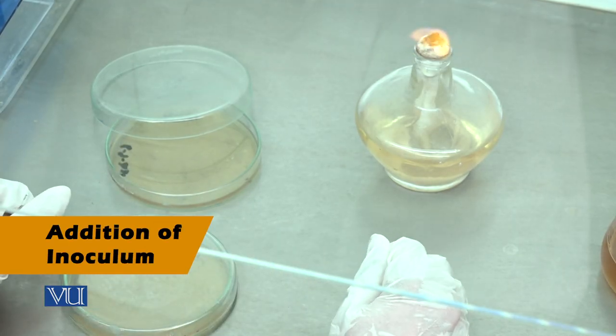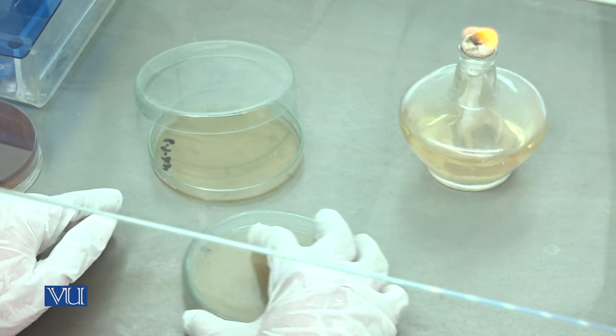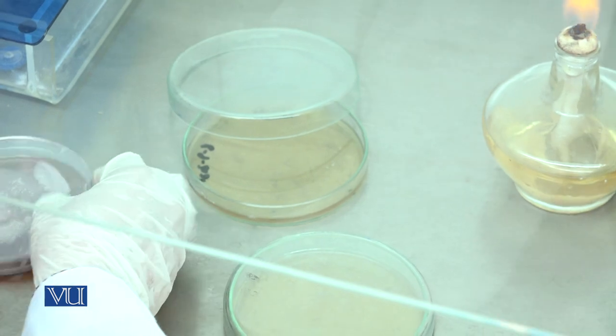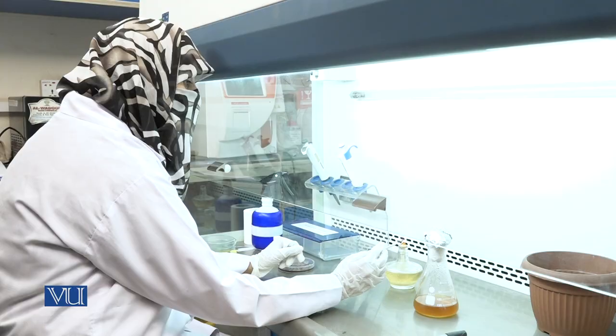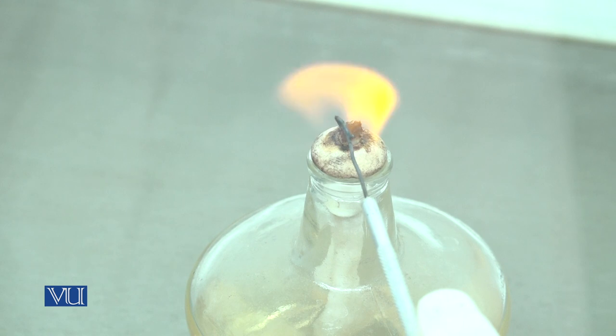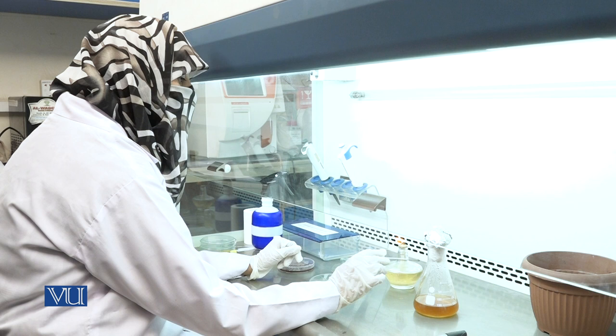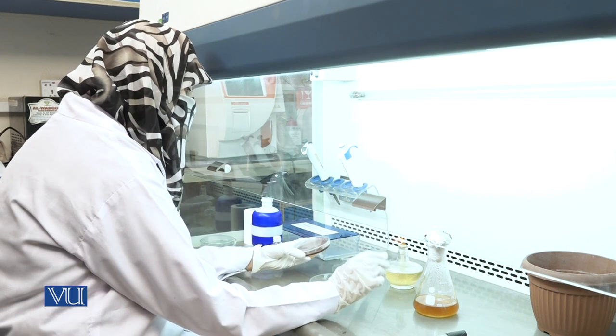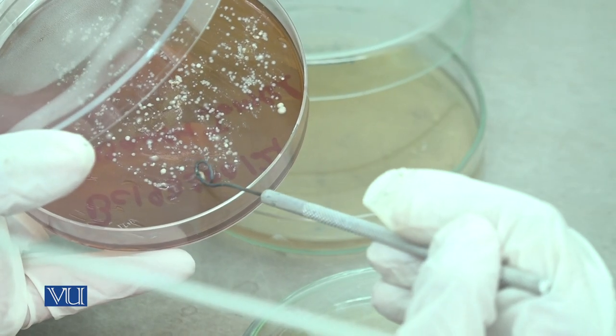Third step is addition of inoculum. If using inoculum from another plate, it is preferable to use single colony from inoculated plates. For inoculation, first flame the inoculating loop to red hot, then allow it to cool for 1-2 minutes. Pick single colony from plate.